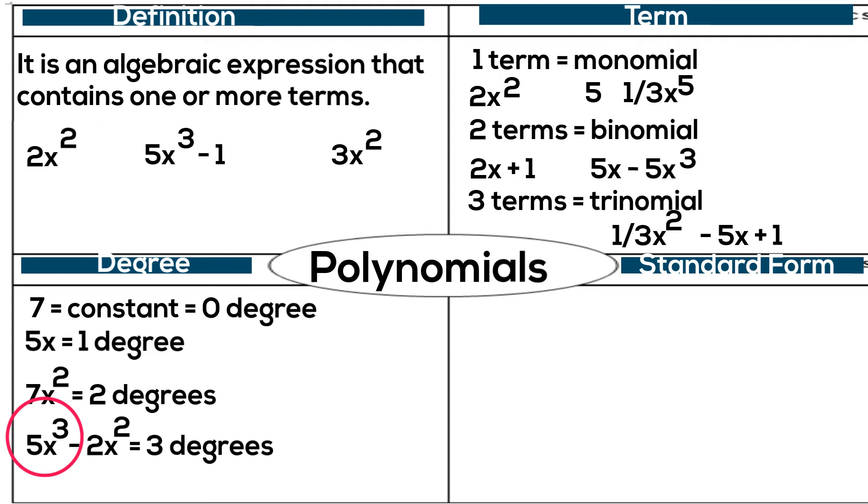So you have a constant with zero degree, linear has a first degree, quadratic is second degree, and cubic is third degree.